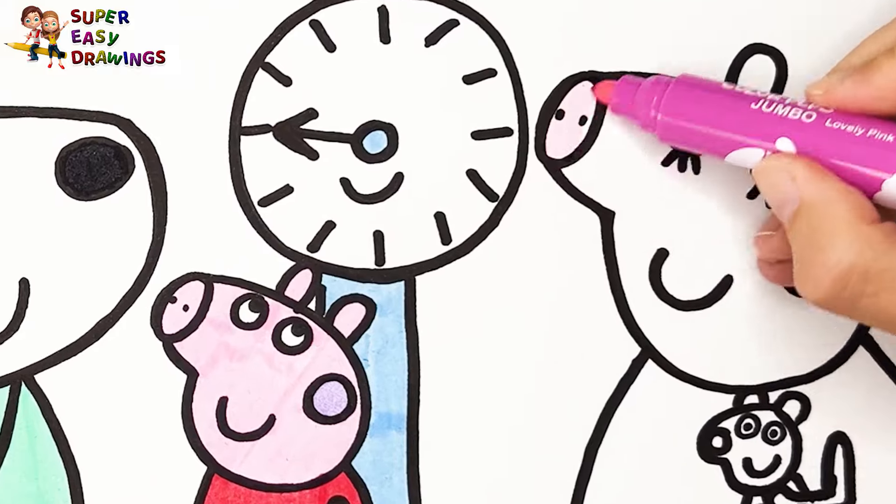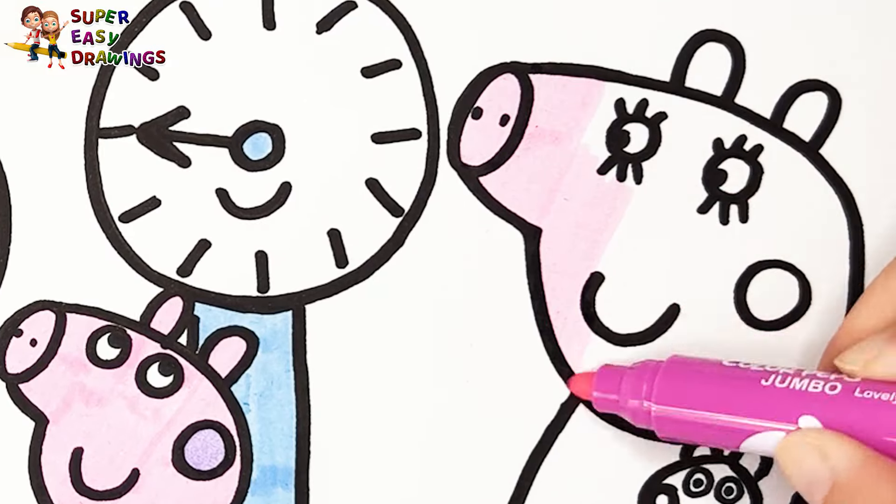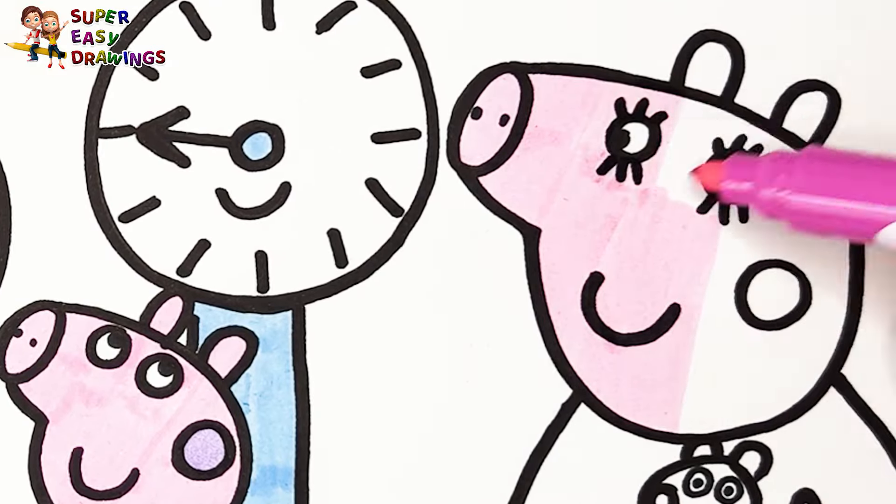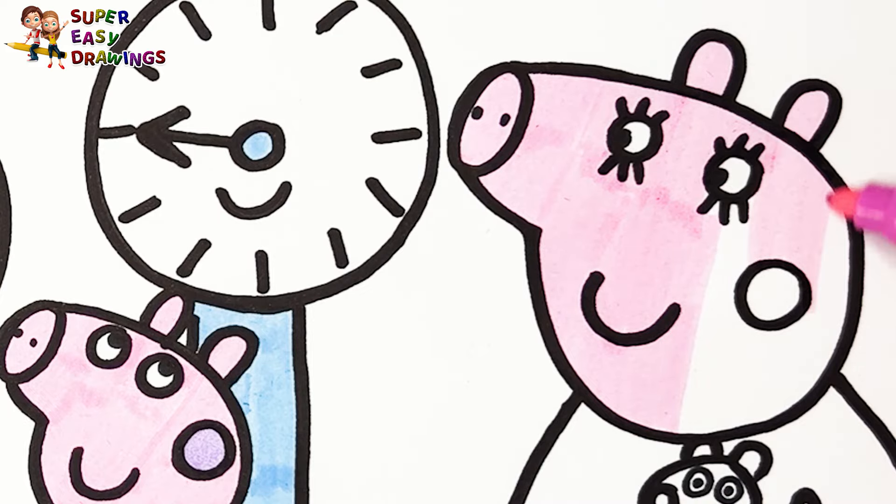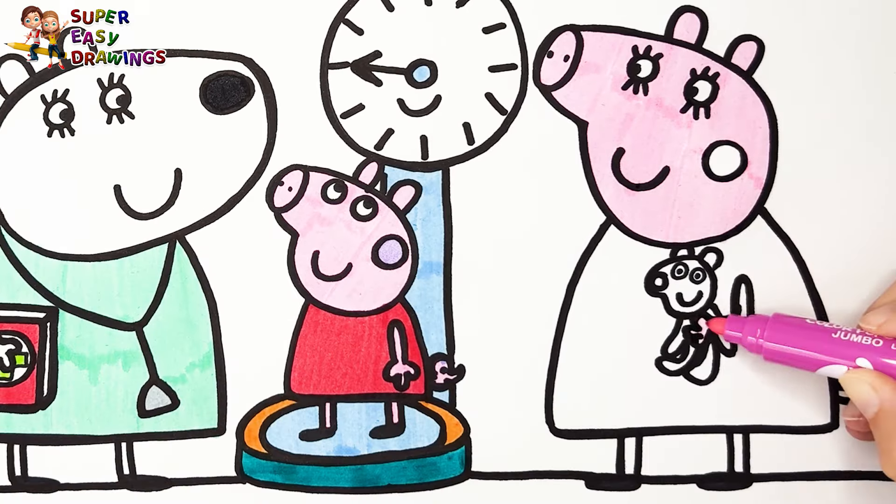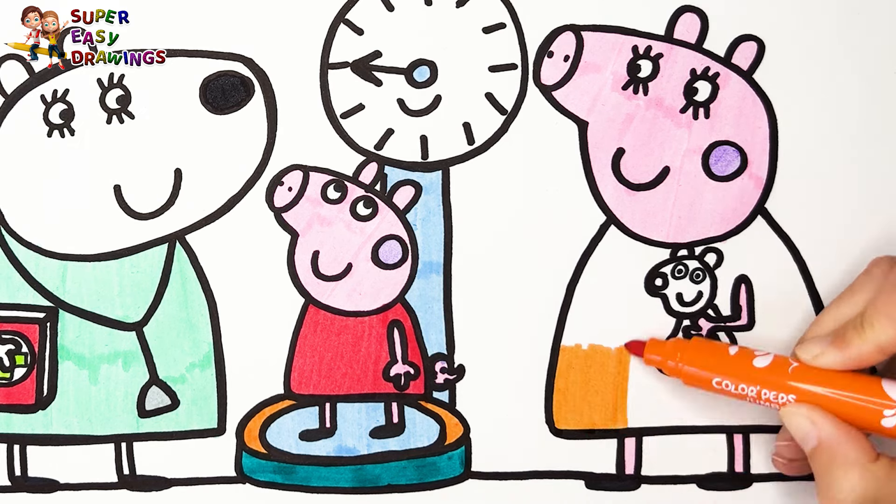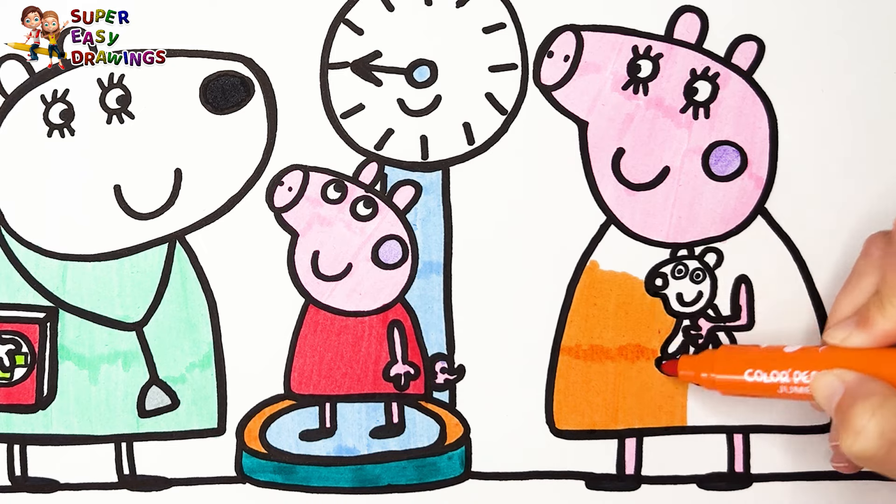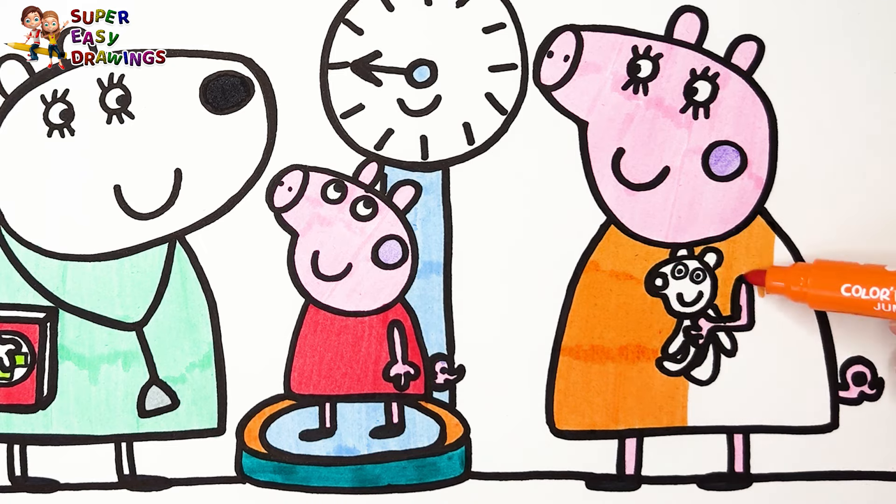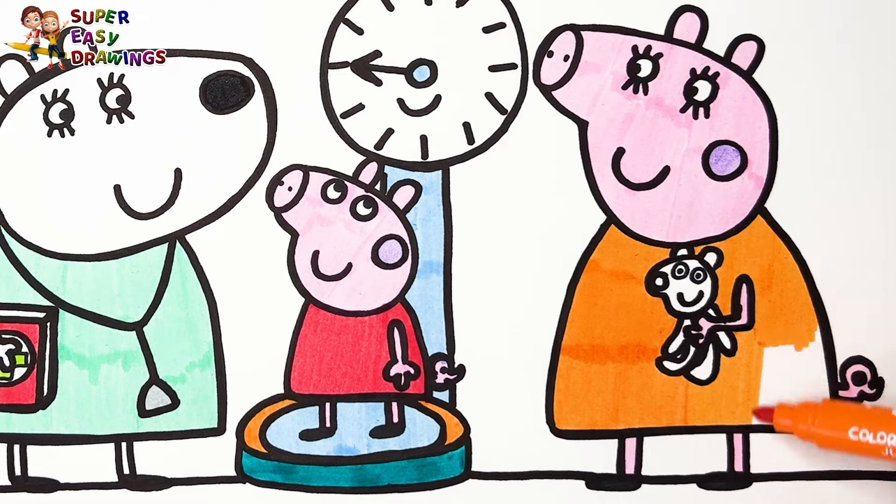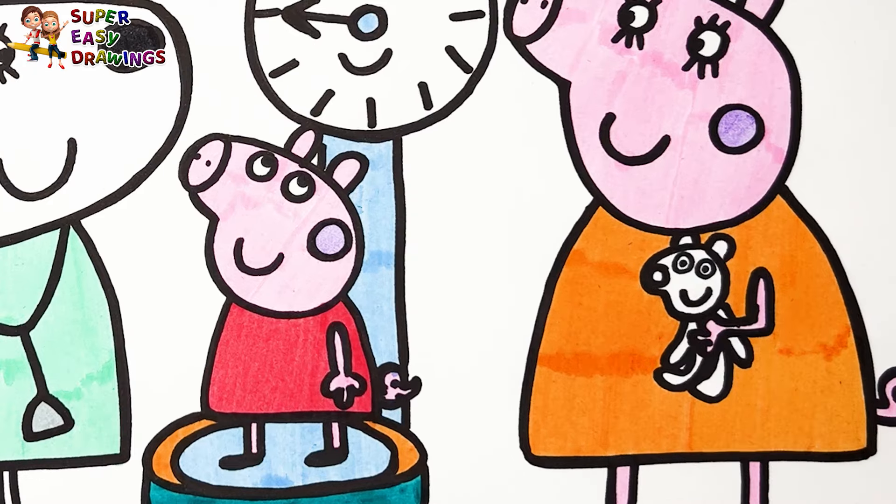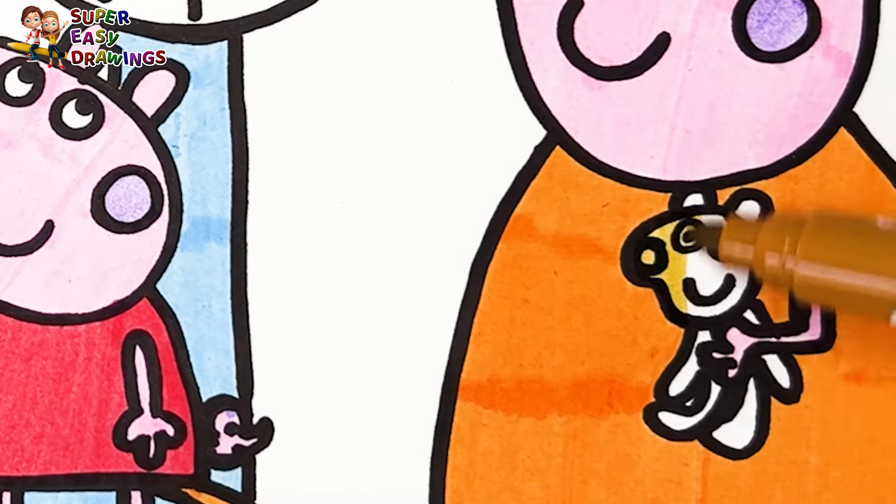Finally, let's color Mommy Pig. I color her skin pink. I use light purple for her cheek. Her dress is orange, so I use this marker. Teddy is going to be brown.